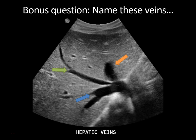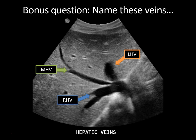Bonus question: can you name these veins? We're looking at a transverse view of the liver with the inferior vena cava visible. This would be the right hepatic vein, the middle hepatic vein, and the left hepatic vein. This is a nice view to obtain when doing an ultrasound of the liver because it divides the liver into different segments at this level — segment seven, segment eight, segment four A, and segment two. The hepatic veins at this level are superior to the level of the portal veins.